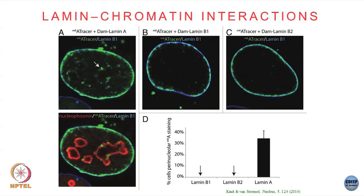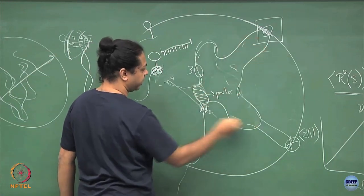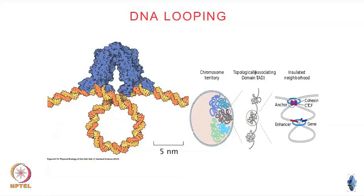Thirdly, there are protein-mediated interactions that fall under the phenomenon called DNA looping. People have found proteins that take two distant segments of DNA and bring them into close proximity — creating what we call a DNA loop.